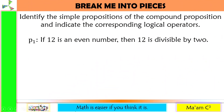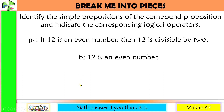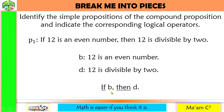Let's have another activity: Break me into pieces. Identify the simple propositions of the compound proposition and indicate the corresponding logical operators. P sub 1 is: 'If 12 is an even number, then 12 is divisible by 2.' The two propositions are: '12 is an even number' and '12 is divisible by 2.' The logical operator used here is 'if...then' — if P, then Q. If 12 is an even number, then 12 is divisible by 2.